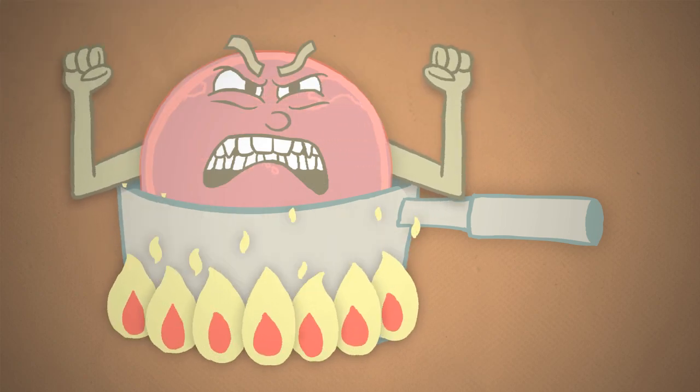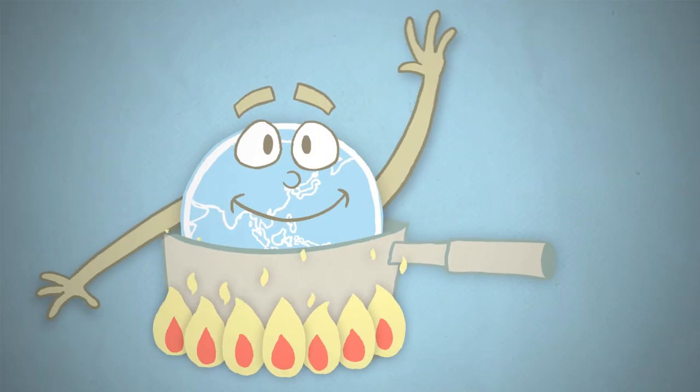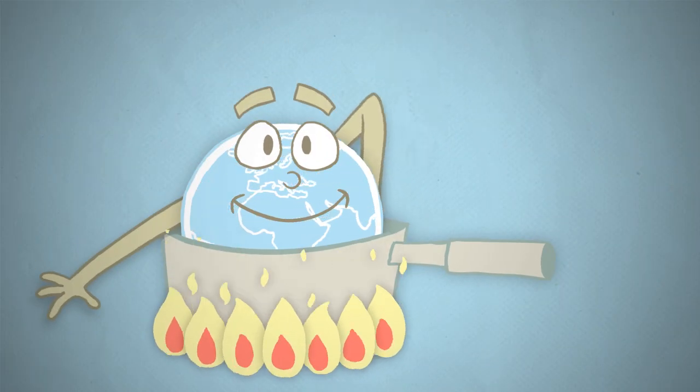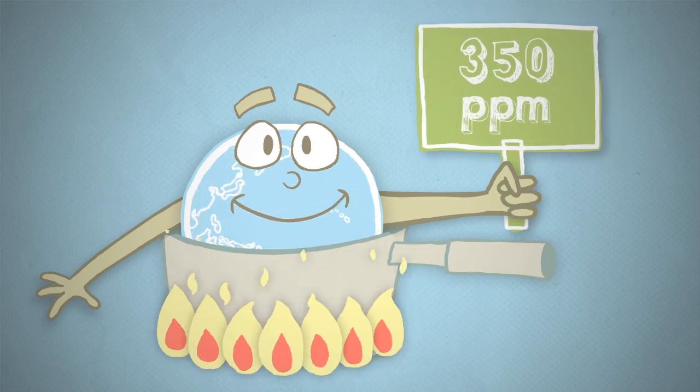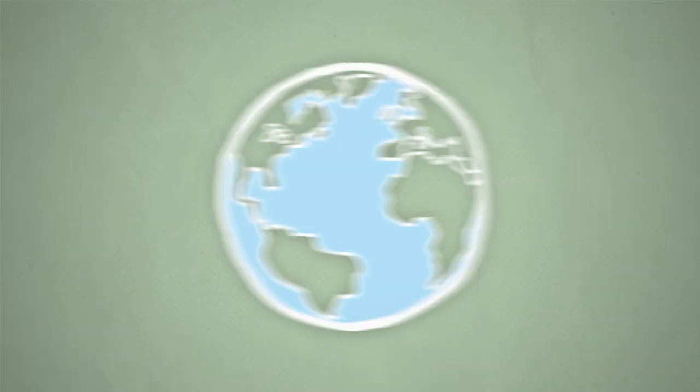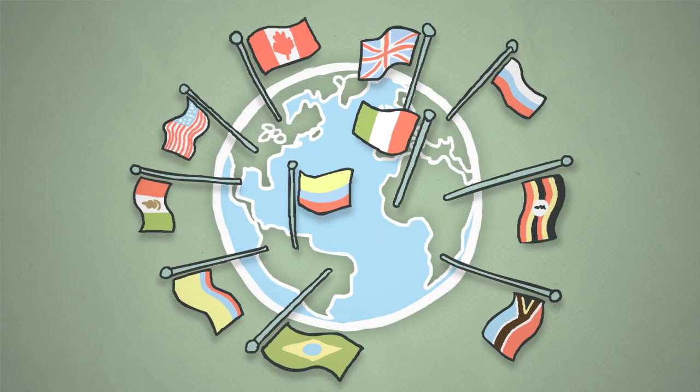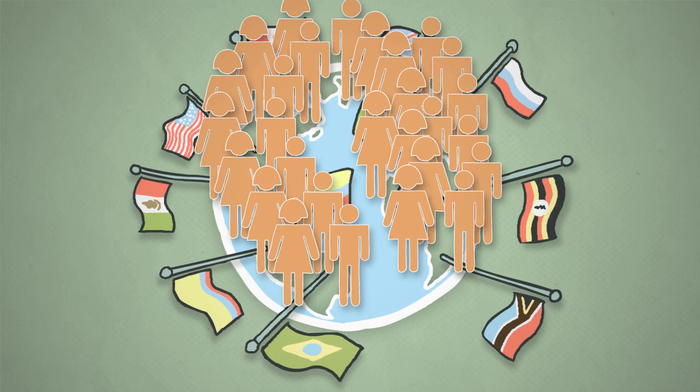To get rapid climate change under control, and to make sure that the planet remains livable, we need to stop that yearly rise and bring carbon dioxide levels back down to 350 parts per million. How do we get there? That will take good decisions by governments around the world, as well as everyday people.